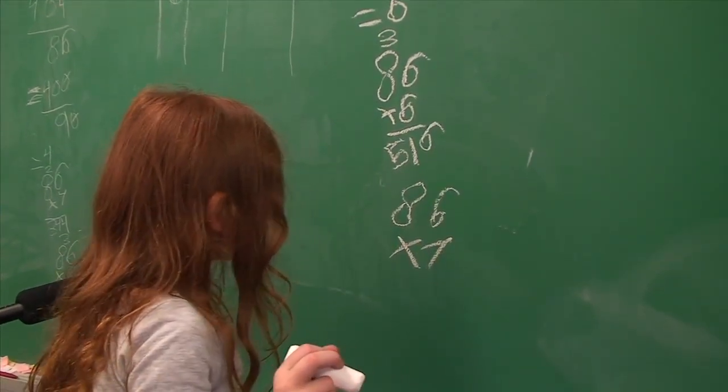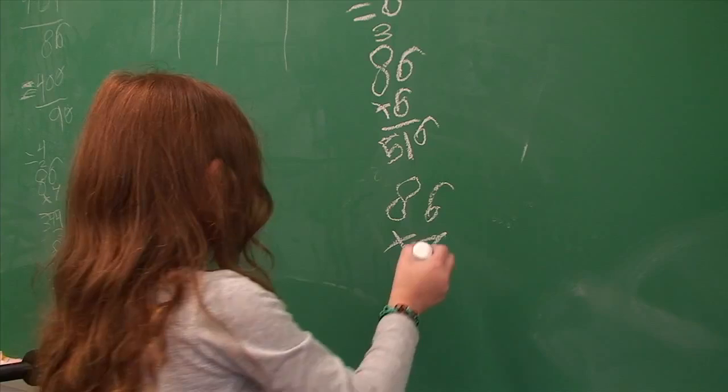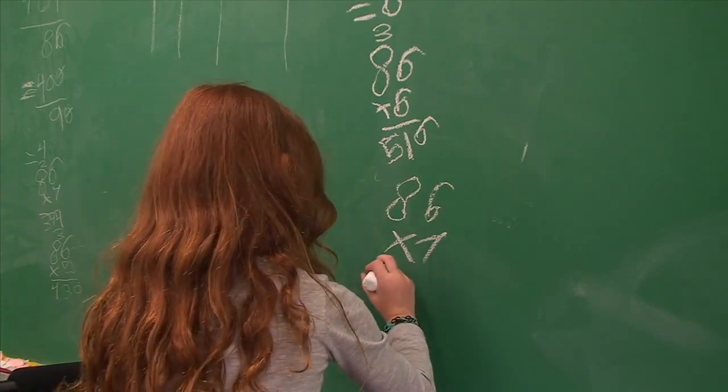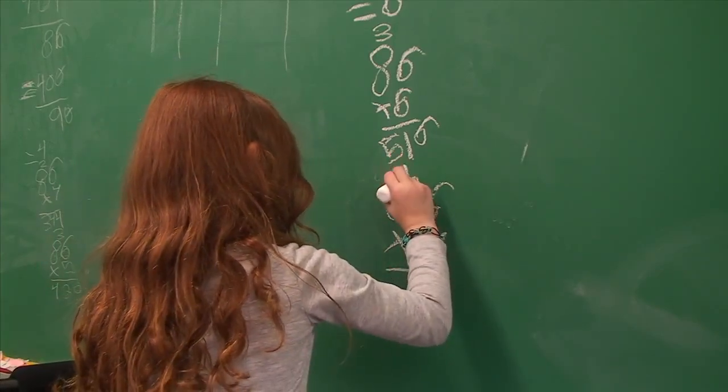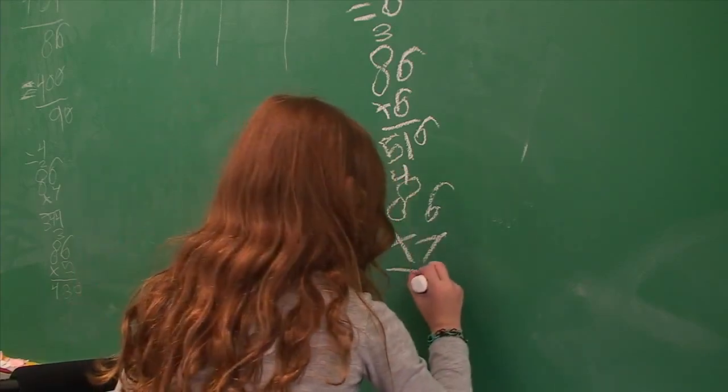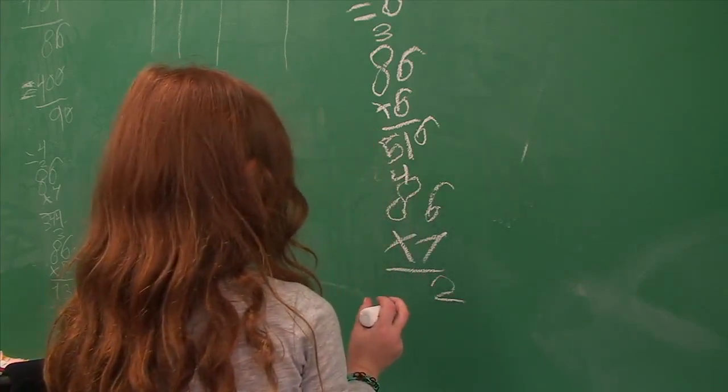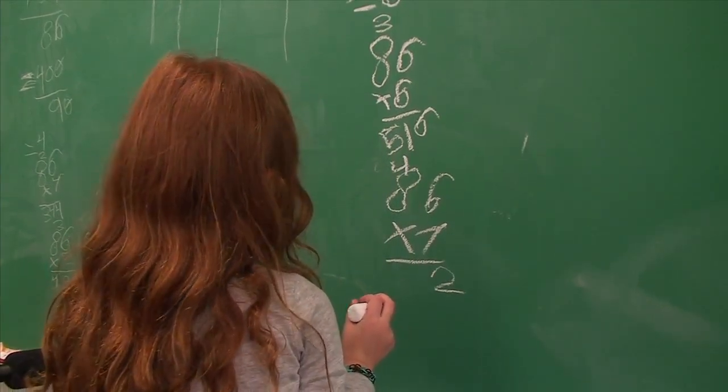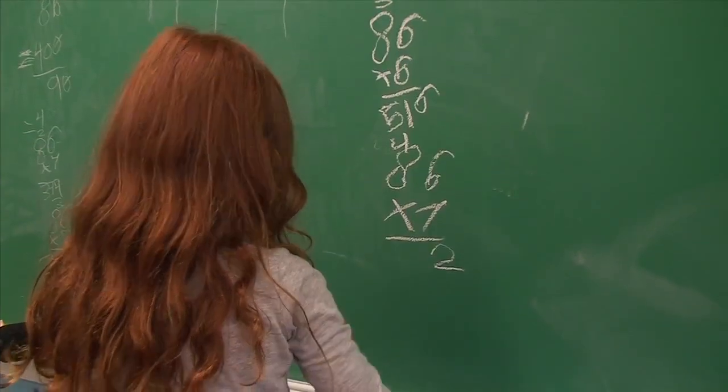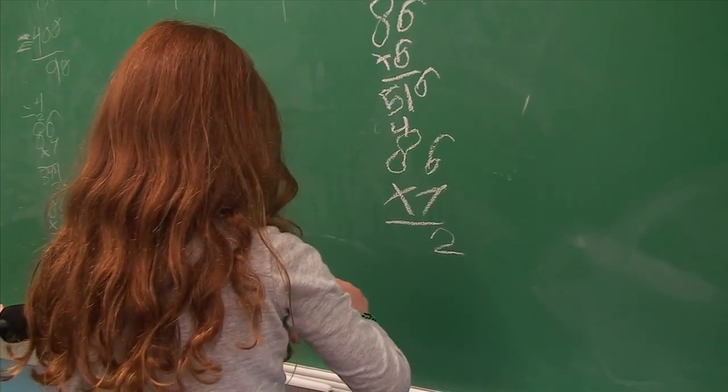6 times 7 is 42. 7 times 8 is 56, 56 plus 4, 57, 58, 59, 60.